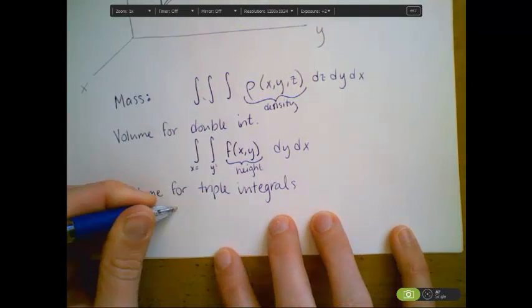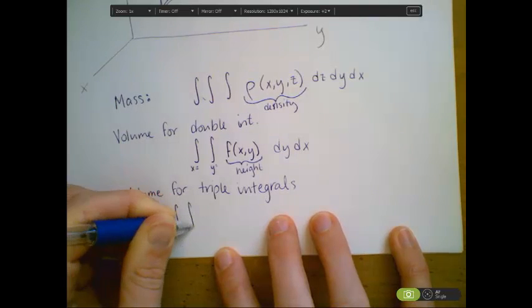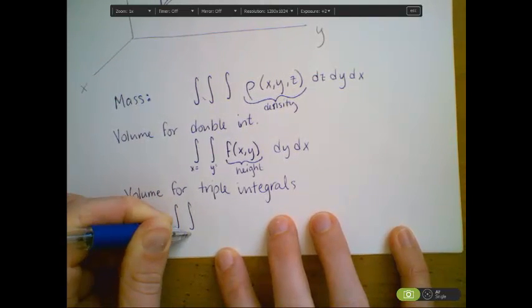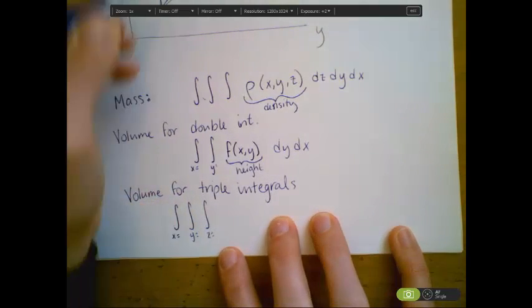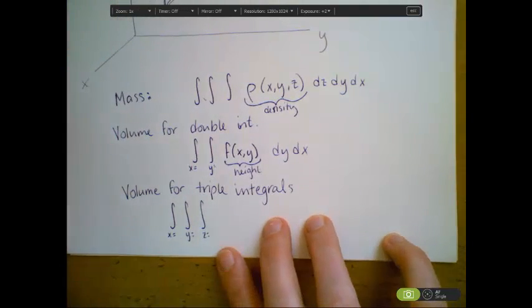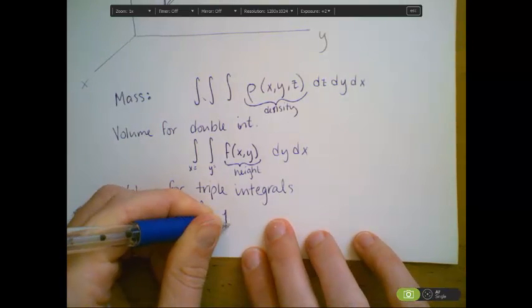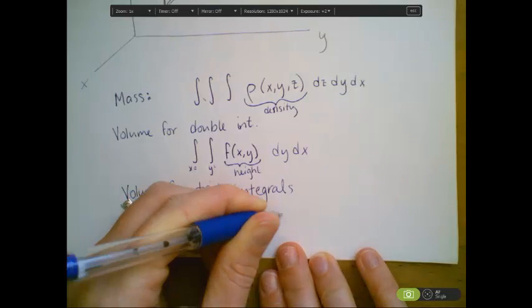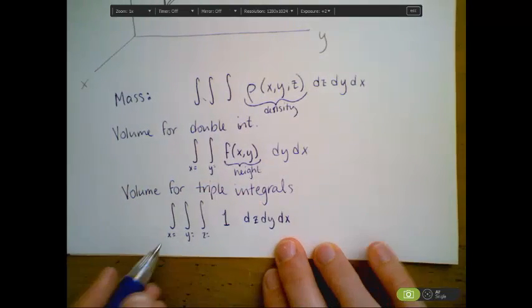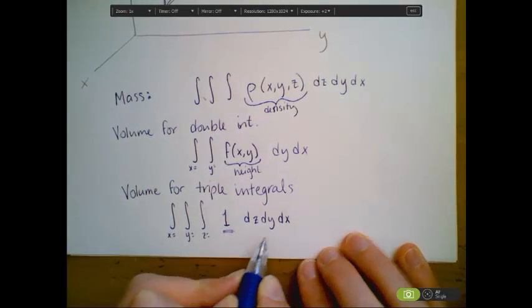Namely, if I look at an integral where x has a bound, y has a bound, z has a bound, over this type of region, but I'm integrating over the function 1, dz dy dx, this will give me the volume.